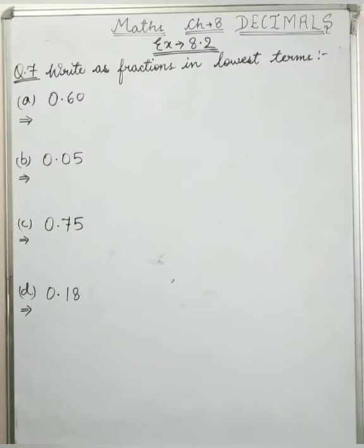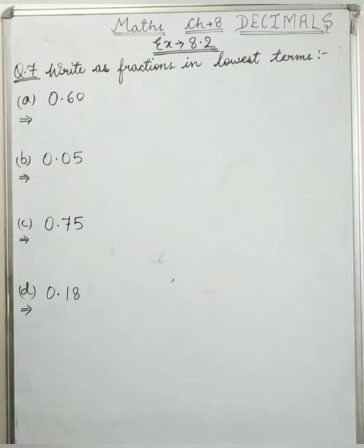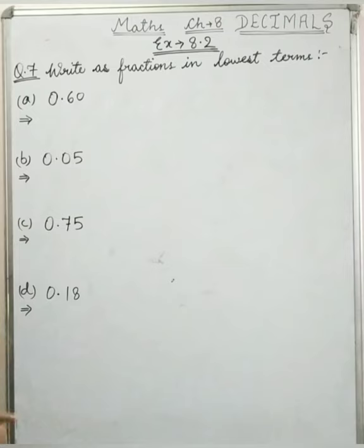Now question number 7, the last question of this exercise. It says: write fractions in lowest terms. The given numbers are decimal numbers, and we have to write them as fractions in lowest terms. So whatever decimal we have, we will convert it to a fraction and then reduce it to lowest terms.